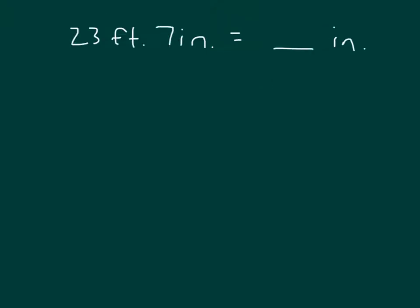In this problem, we have 23 feet 7 inches equaling how many inches? 1 foot is equal to how many inches? Right, 12 inches. So the first thing that we will do is we will look at how many inches that the 23 feet is worth. What do we do with the 23? We multiply it by its conversion factor.